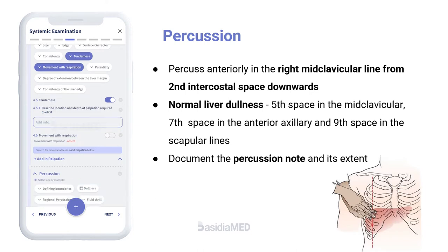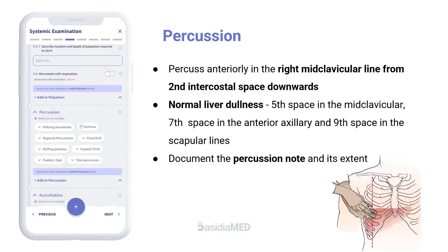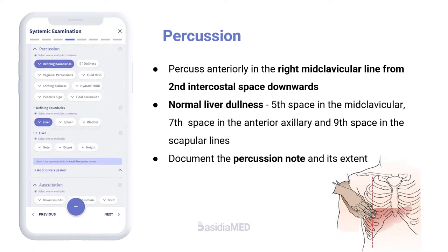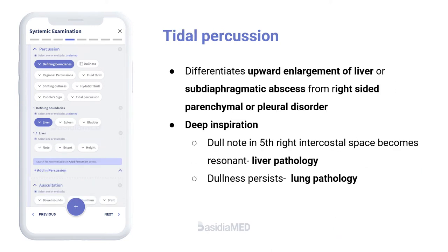Percussion of the Liver. Percussion is started anteriorly in the right midclavicular line from the second intercostal space downwards. Repeat in the anterior, mid, and posterior axillary lines and the scapular line posteriorly. The normal liver dullness is in the fifth space in the midclavicular, seventh space in the anterior axillary, and ninth space in the scapular lines. Record the percussion note and its extent.